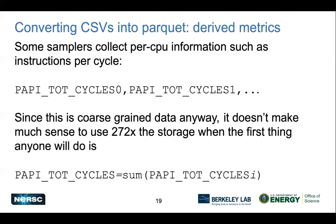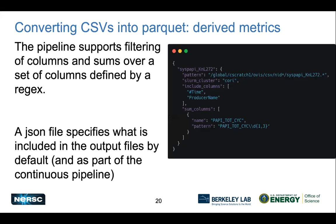What about derived metrics? The per-CPU performance counters come in with one value per hyper-thread. In general, per-hyper-thread data isn't the most interesting use case - this data is pretty coarse-grained anyway, so what you probably want is cycles per node, which is a basic sum. If you wait to do this calculation later, on a KNL job you've wasted 272x of storage waiting to apply this operation. We want a way to pre-compute these things and throw out the less important data.